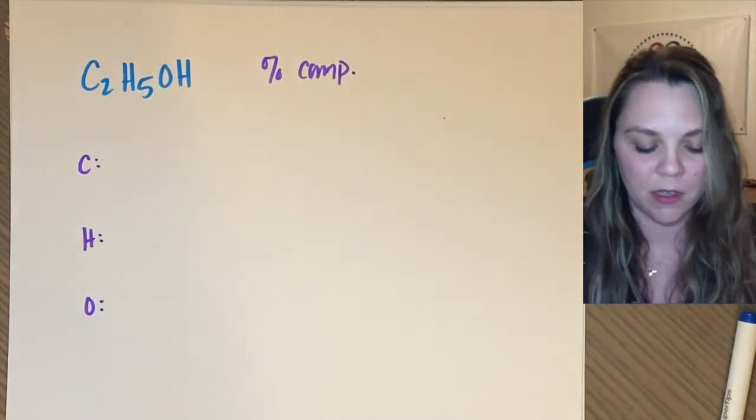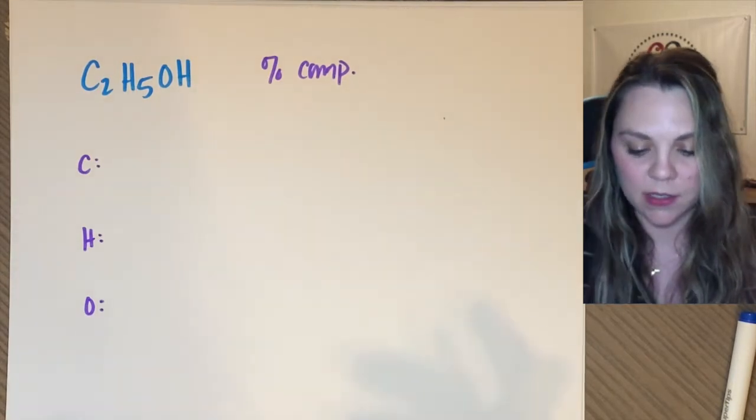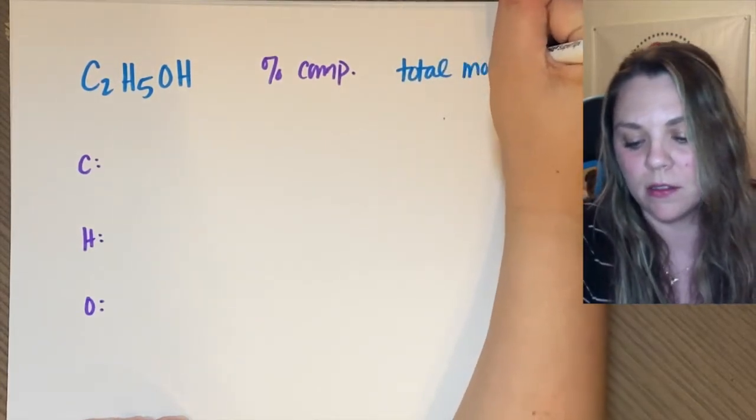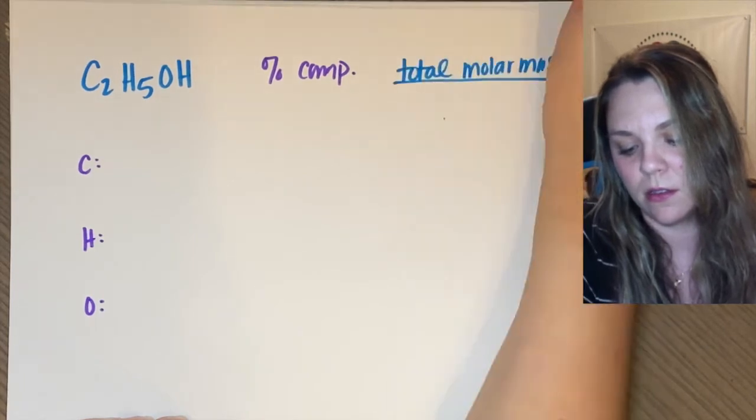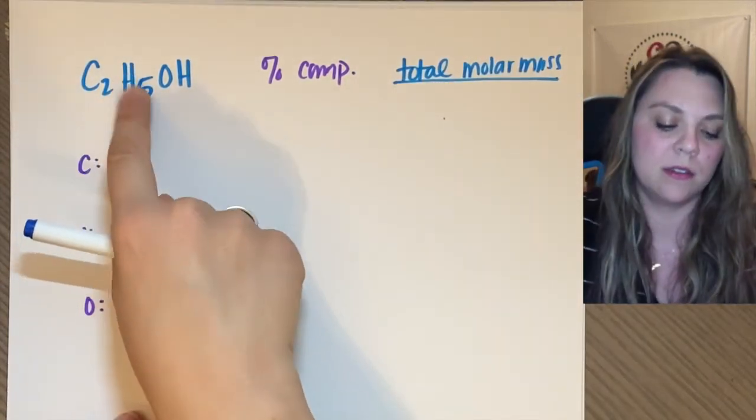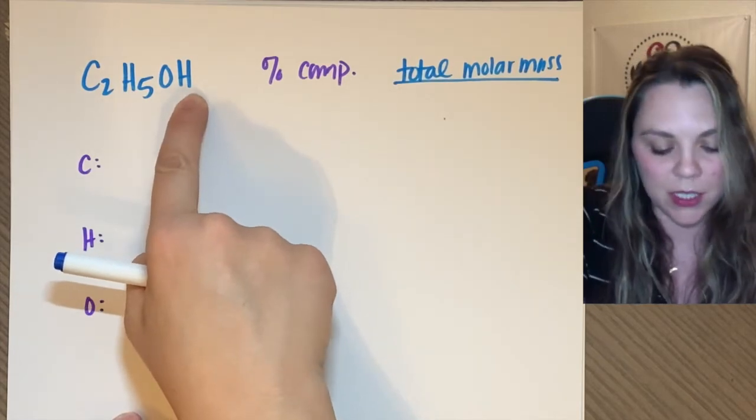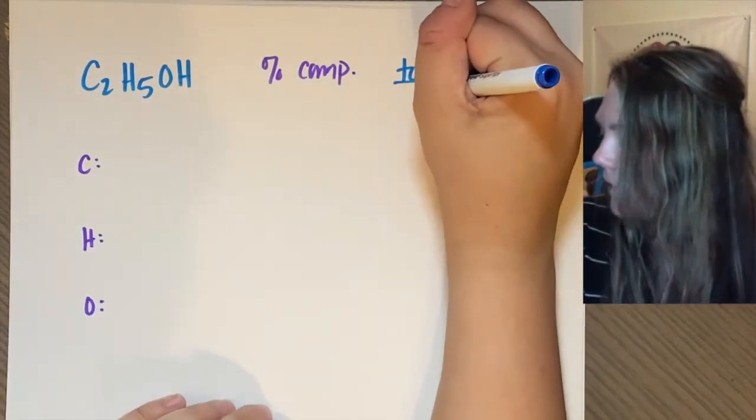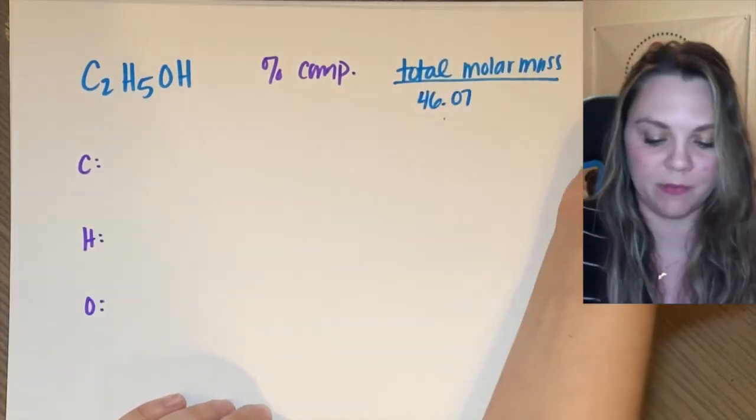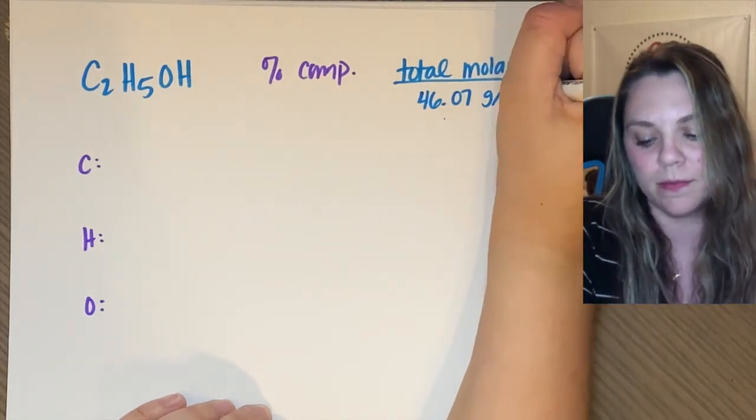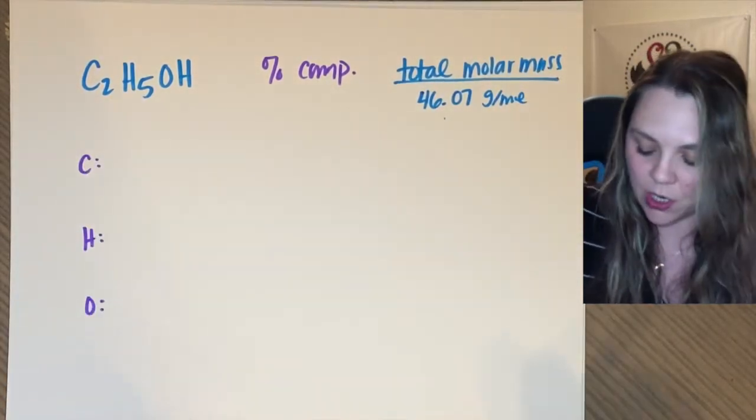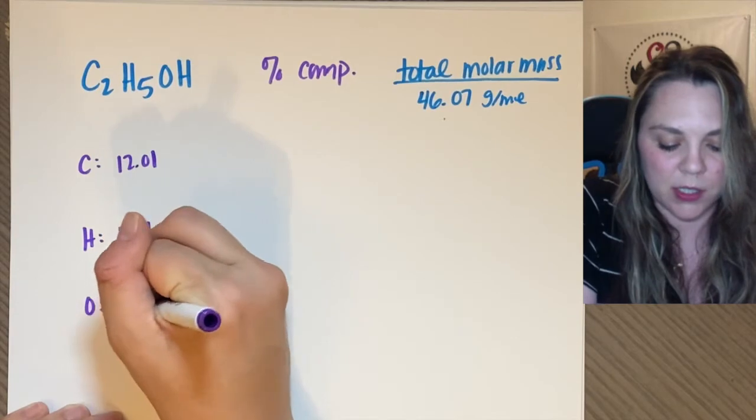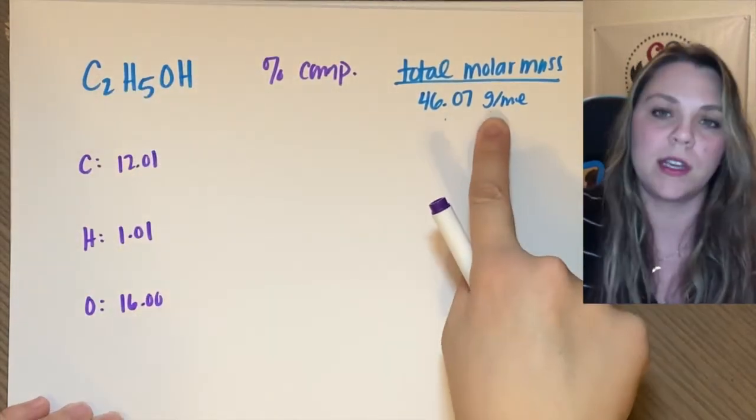I would suggest first thing is get the total molar mass. So two carbons plus five hydrogens plus one oxygen plus another hydrogen, and we get 46.07 grams per mole. Because each carbon is 12.01, each hydrogen is 1.01, oxygen is 16. Add them all up, you should get 46.07.